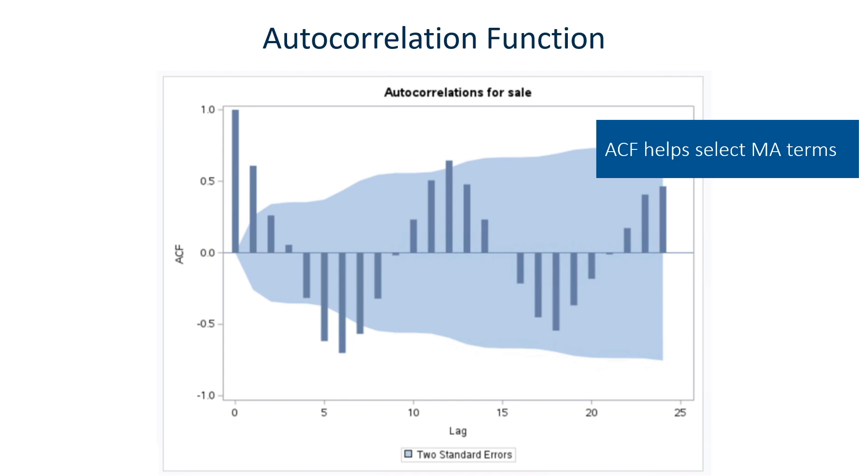It can also support our diagnosis of a need for AR terms. If the ACF bars drop after zero, then try, for example, a moving average one model. Remember, our moving average term is also called our Q. So we would set Q equal to one. Then we can try that model and see how it works. The beauty of SAS Visual Forecasting is that you can easily try a model. You can set your MA to one. You can try that. You can set your AR to one. You can try different models and see which give you the best results.